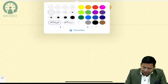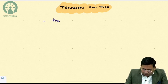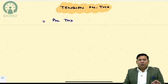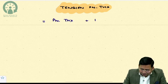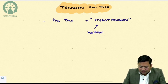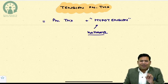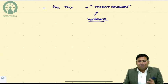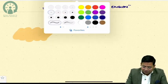In layman's language, tension pneumothorax is any pneumothorax where there is a component of hypotension. Pneumothorax plus hypotension — hypotension is the hallmark feature. If hypotension is not there, it is not a tension pneumothorax. This hypotension occurs because of cardiogenic shock — specifically, compressive cardiogenic shock.